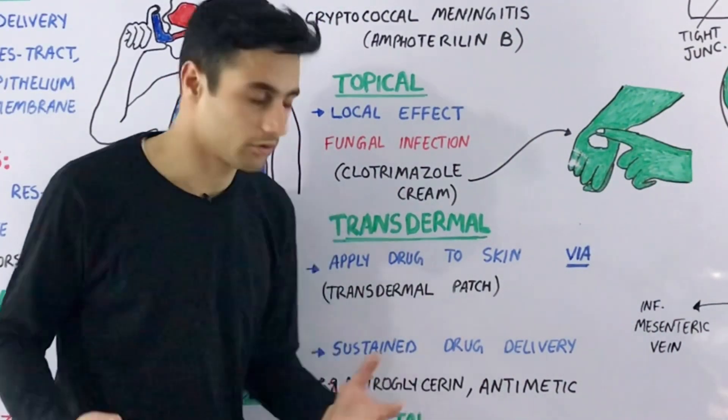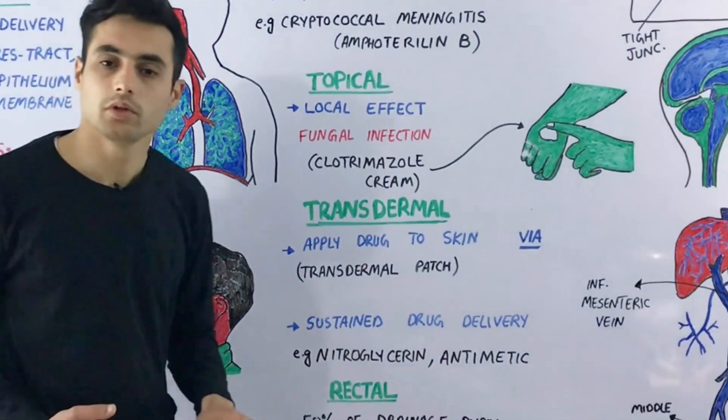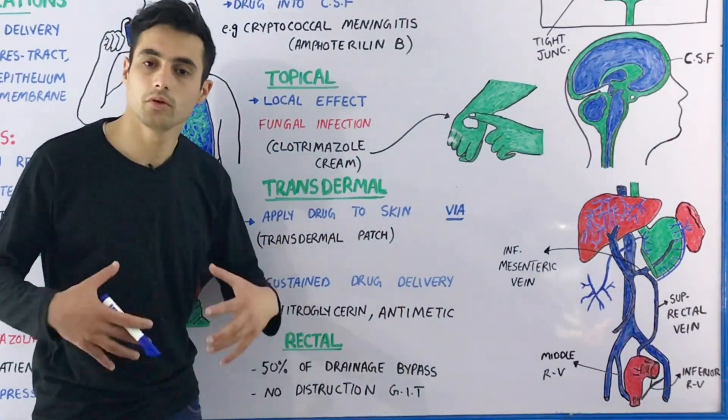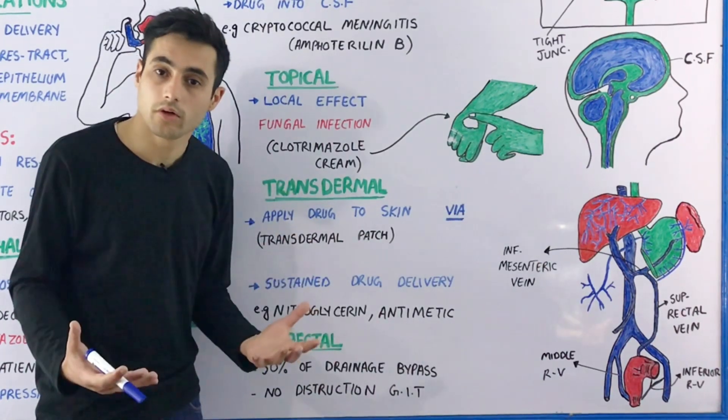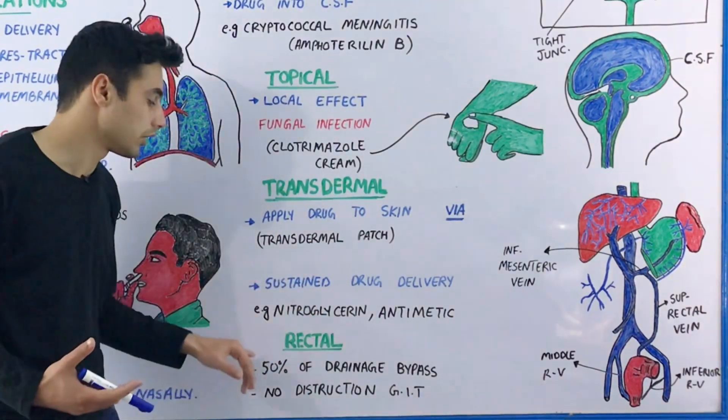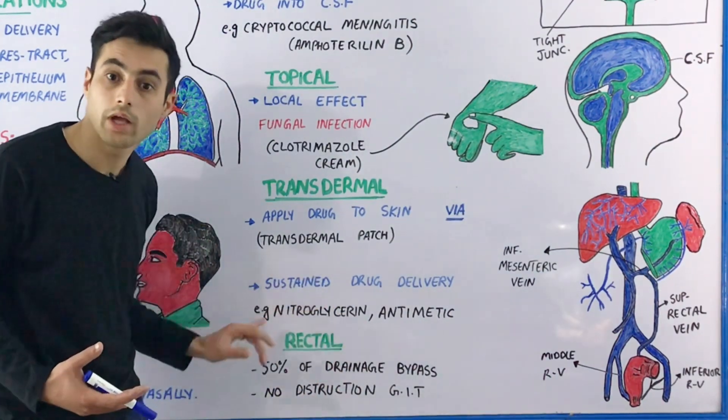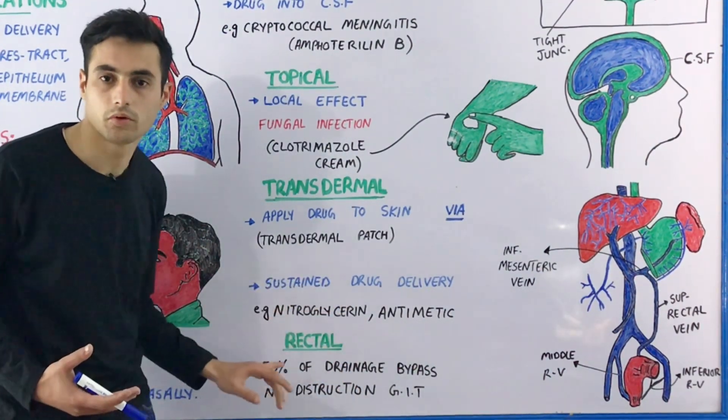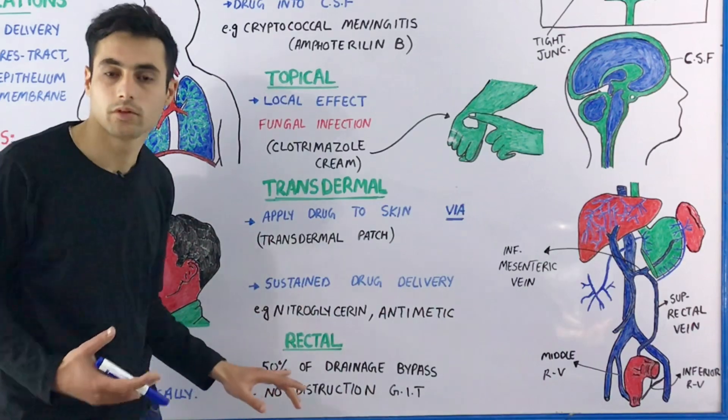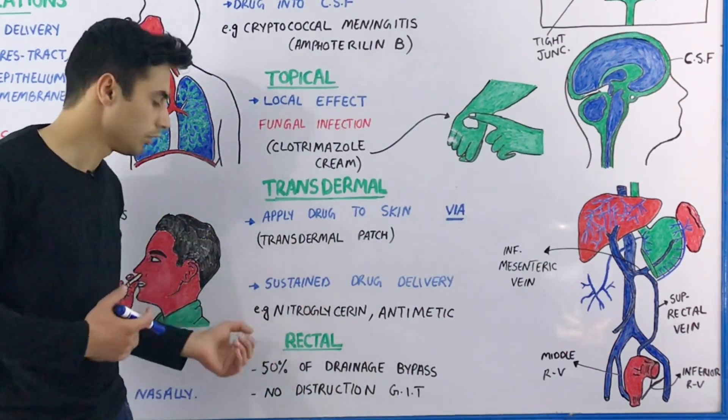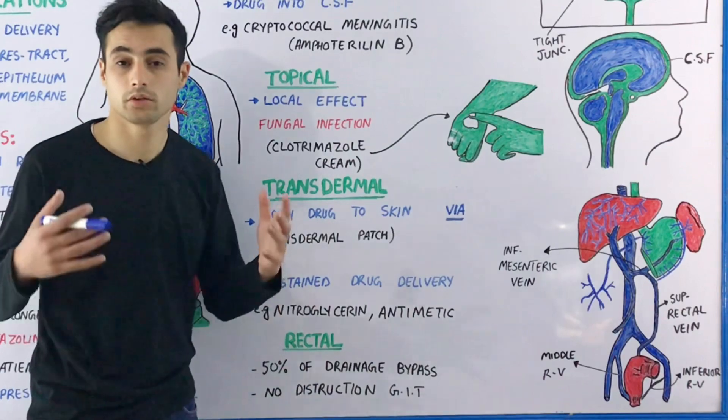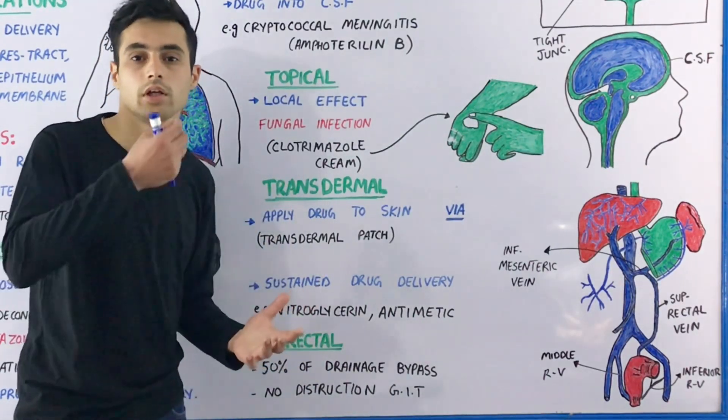The rectal route: 50% of your rectal drainage doesn't cross the liver, so medications taken through the rectum have more efficacy. In other words, they are more effective compared to other routes. But why use the rectal route?